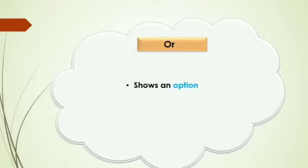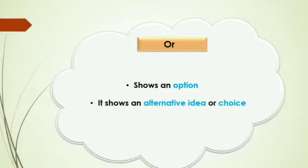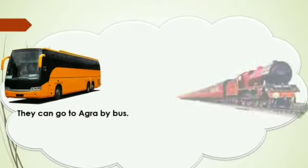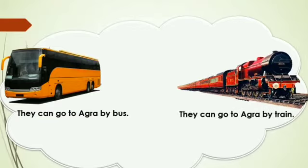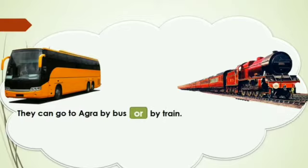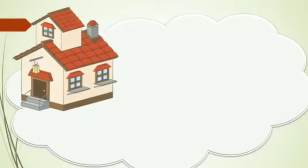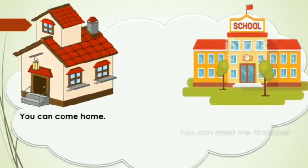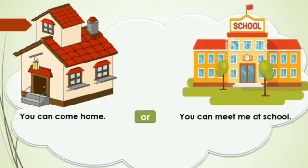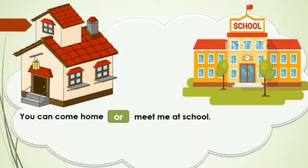Let's move to another kind of conjunction — 'or.' 'Or' is used to show an option, or you can say it shows an alternative idea or choice. For example: They can go to Agra by bus. They can go to Agra by train. With the conjunction 'or,' the new sentence is: They can go to Agra by bus or by train. Another example: You can come home or meet me at school.